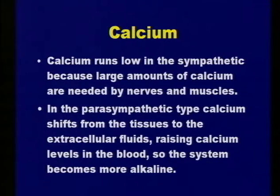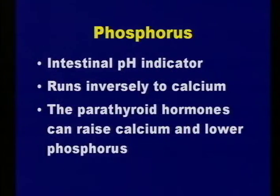In the parasympathetic type, calcium shifts from the tissues to the extracellular fluids, so calcium levels in the blood go a little bit higher, making it more alkaline. Parasympathetics don't tend to require more calcium as they already have an excess, but they're still leaching it out, so you have to find a way to get the body to hold on to a little more. Phosphorus is next—it's your intestinal pH indicator. It's the opposite of calcium, controlled by parathyroid hormones that can raise or lower it. So phosphorus runs high in the sympathetic and low in the parasympathetic.